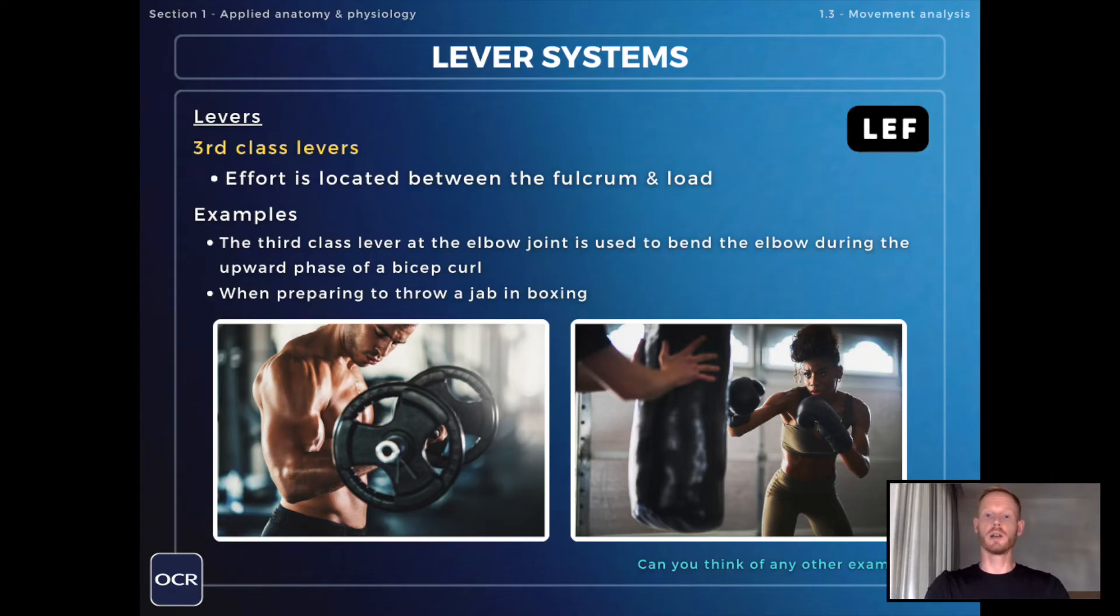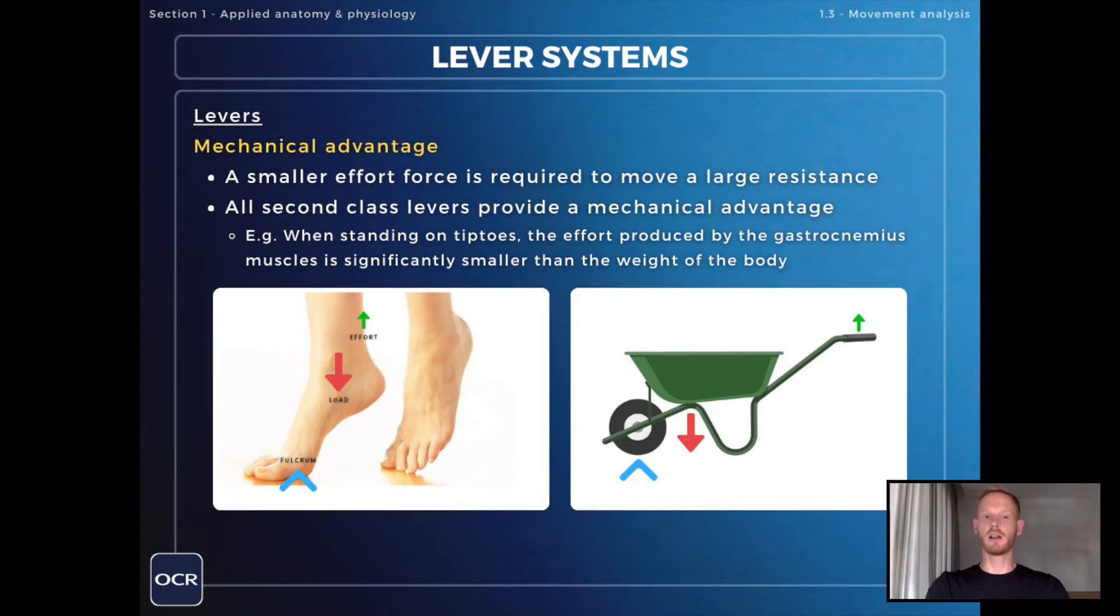Now in addition to the three classes of lever you also need to know about something called mechanical advantage. Simply put, mechanical advantage is the ability to move large loads with a smaller amount of effort. All second-class levers provide a mechanical advantage. For example when standing on tiptoes the effort produced by the gastrocnemius muscles is less than the load force created by the weight of the body.